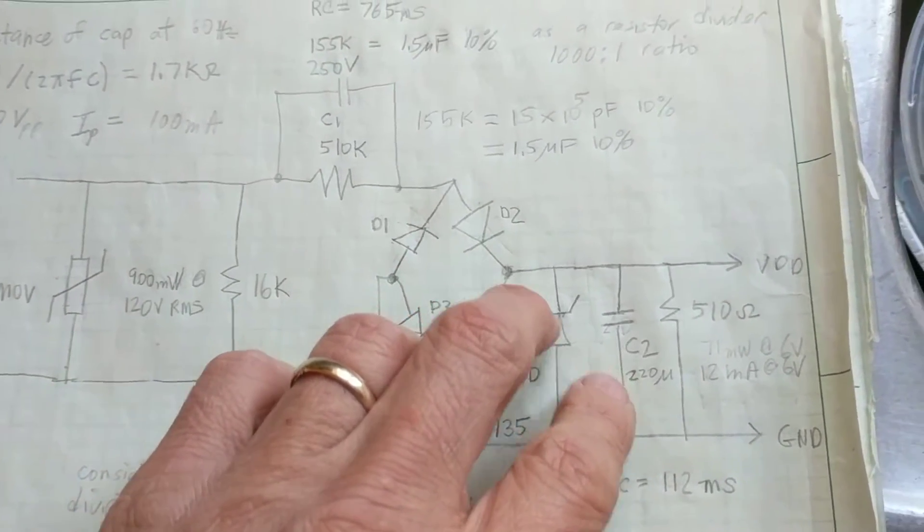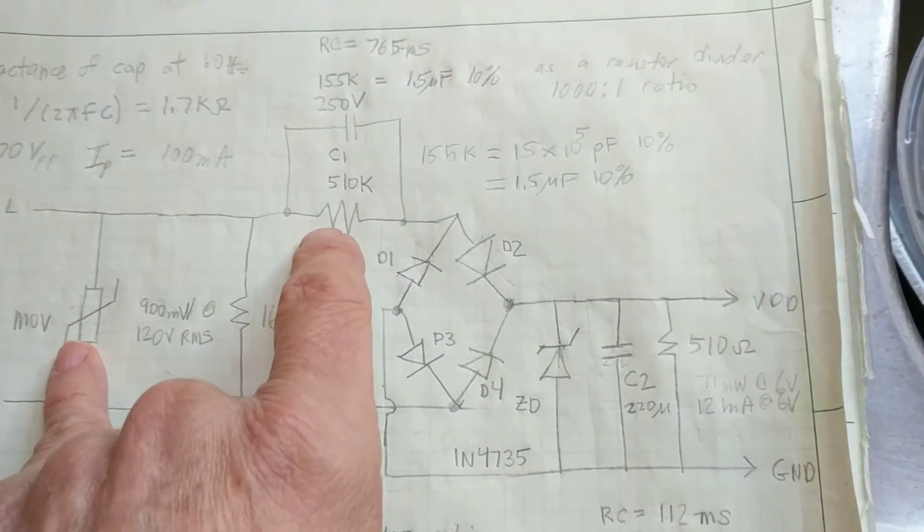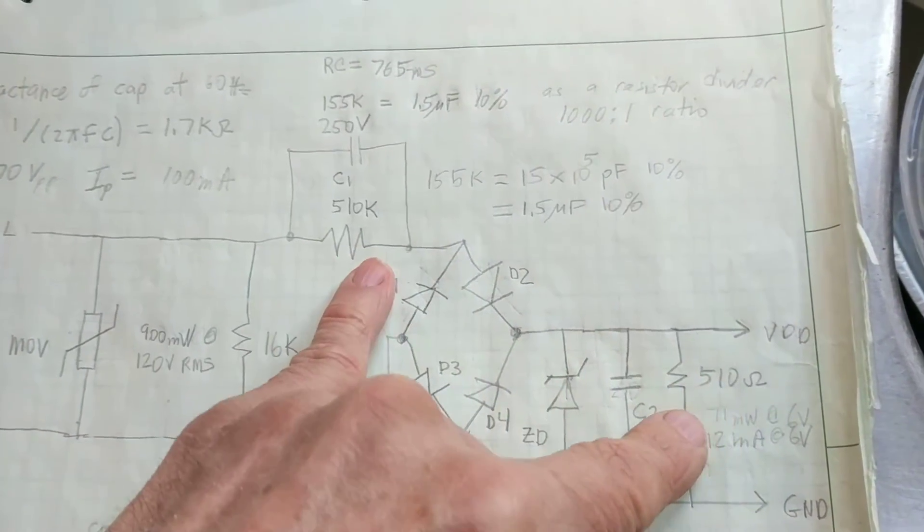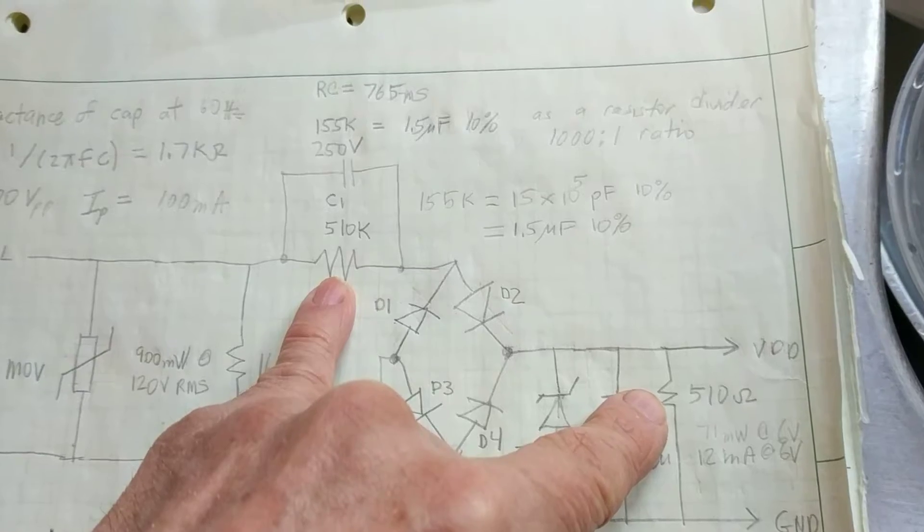At first, I didn't really understand the circuit. I thought that this 510 K would completely drop the voltage to be too low of a quantity, if you simply look at it from the voltage divider point of view.